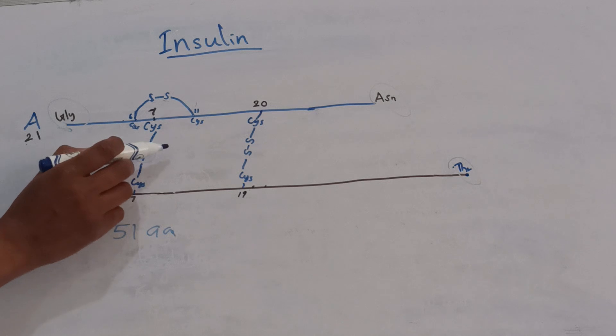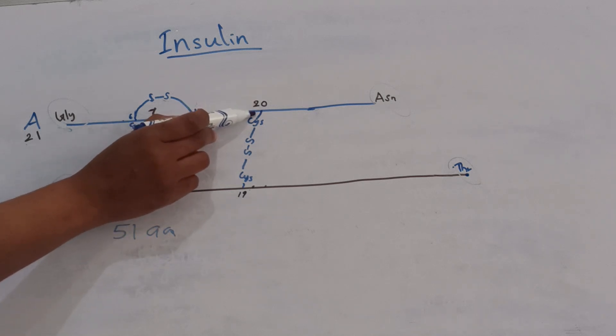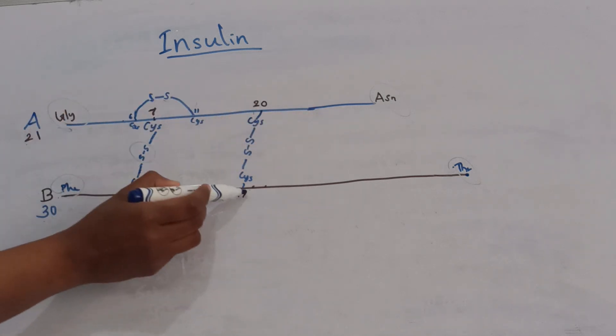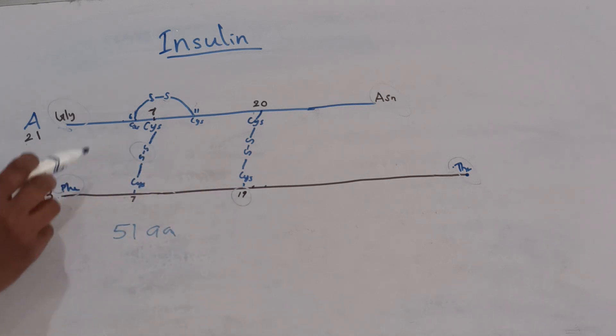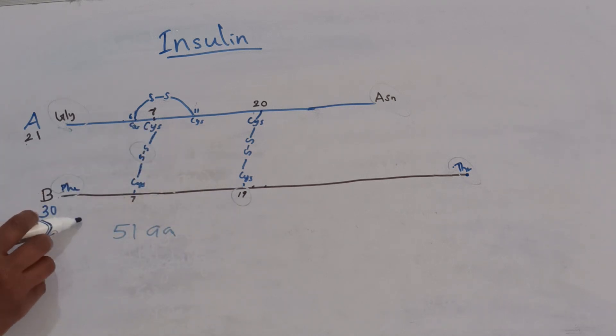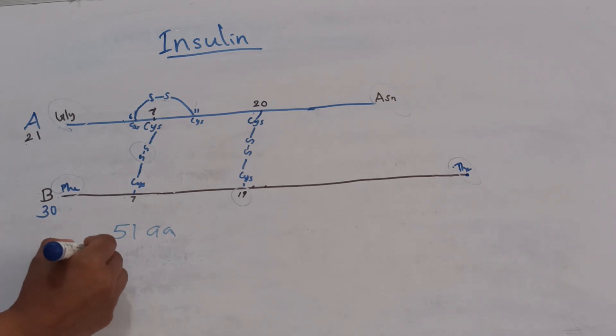The second disulfide bond is present between the 20th amino acid of A chain and 19th amino acid of B chain. These two disulfide linkages are known as inter-chain disulfide bonds.